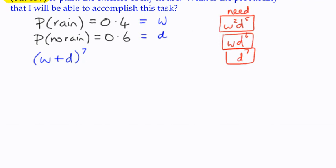But we don't know what the coefficients are. So we're going to have to look at the, perhaps the general term and we'll pick out from that. So let's see what the general term of W plus D to the power of 7, N is 7.